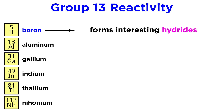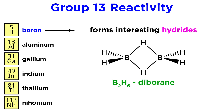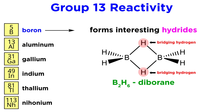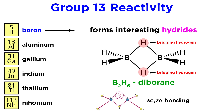Boron's most interesting chemistry comes in the way of its hydrides. The simplest of these is B2H6, or diborane, a colorless pyrophoric gas, meaning it ignites spontaneously in air. If this Lewis structure seems a bit off to you, it is for good reason. We see two lines stemming from these two hydrogens, seemingly implying they each make two covalent bonds, which we know is impossible. It is actually the case that these are bridging hydrogens, and these are three-center, two-electron bonds, abbreviated as 3C2E.